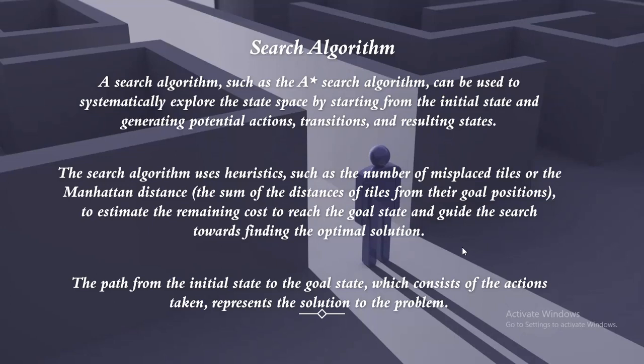The search algorithm continues to explore the state space by generating actions, transitions and resulting states, expanding the search tree until it finds a state that matches the goal state, indicating a solution has been found. The path from the initial state to the goal state, consisting of the actions taken, represents the solution to the problem. In summary, defining a problem as a state space search in AI involves representing the problem as a set of states, actions and transitions, and using a search algorithm to systematically explore the state space. The 8 puzzle problem illustrates how this concept can be applied in practice.